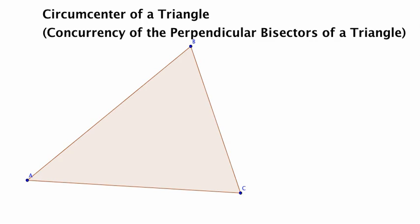We're going to start out with an acute triangle because it makes things a little bit easier to understand. And we're looking for the point of concurrency of the perpendicular bisectors of a triangle.